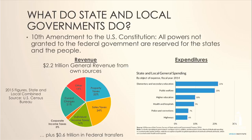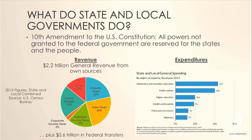States are raising about $2.2 trillion from those own sources and an additional $0.6 trillion in federal transfers. The federal government gives state and local governments a fair amount of funding, in addition to setting some rules that allow them to raise money on favorable terms. State and local governments provide a number of public services not directly provided by the federal government.